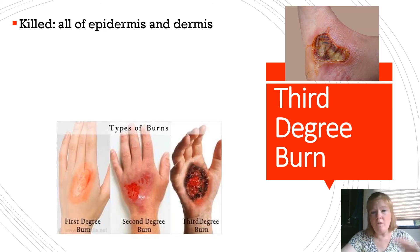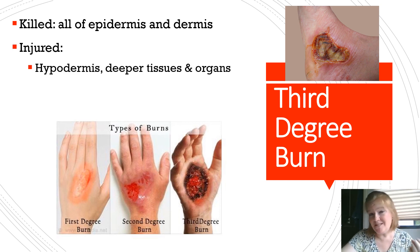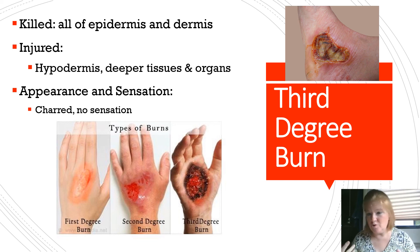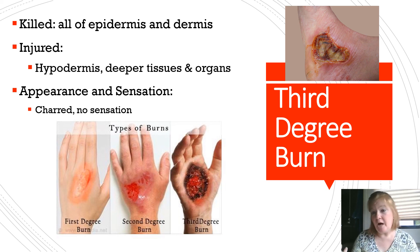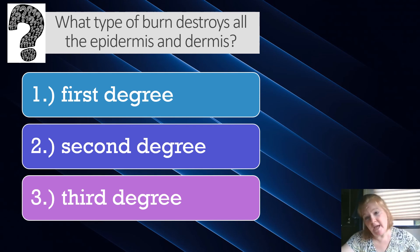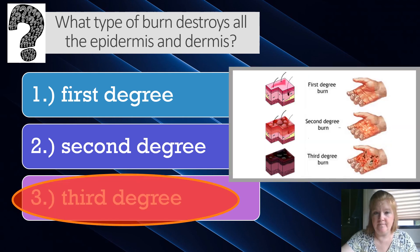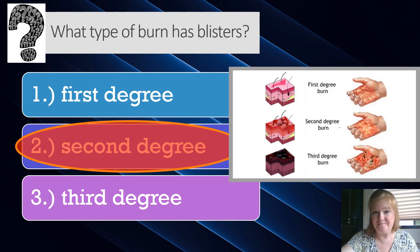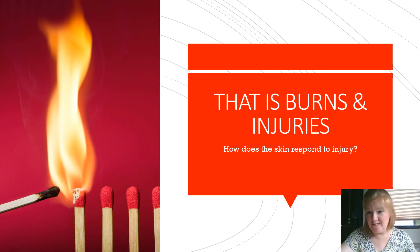A third degree burn kills all of the epidermis and all of the dermis, with the injury probably extending into the hypodermis and potentially deeper tissues and organs. The appearance is charred with no sensation, however it is often surrounded by first and second degree burns, so there is still pain present. Some places categorize a fourth degree burn extending into muscle and bone, but we focus on first, second, and third degree. To review: third degree destroys all epidermis and dermis; second degree causes blisters. That's burns and injuries — how the skin responds to injuries.